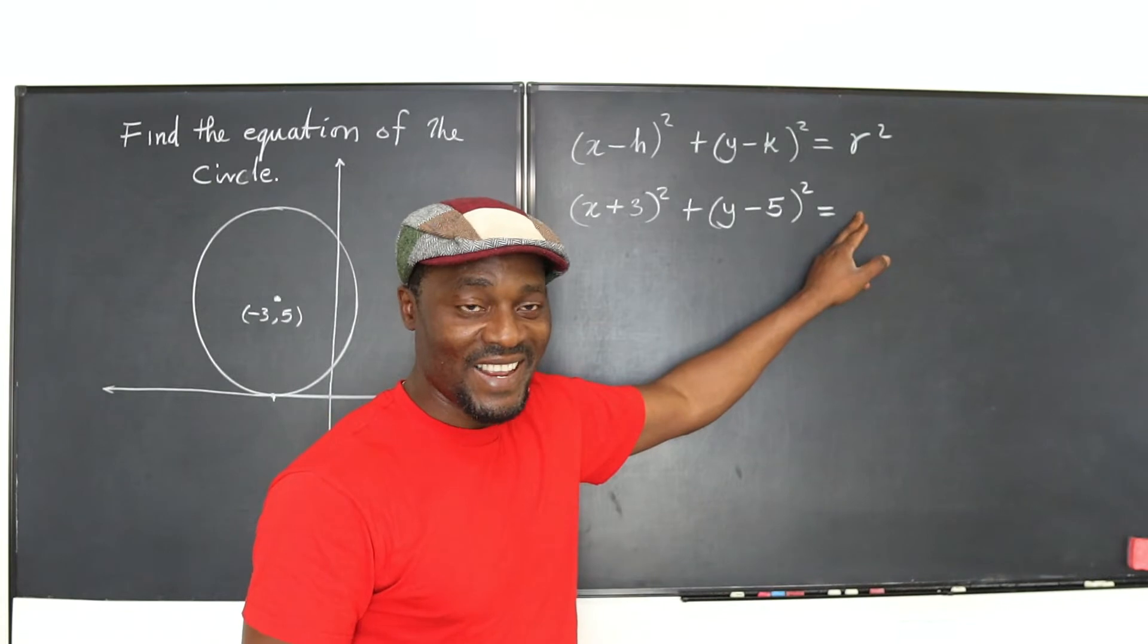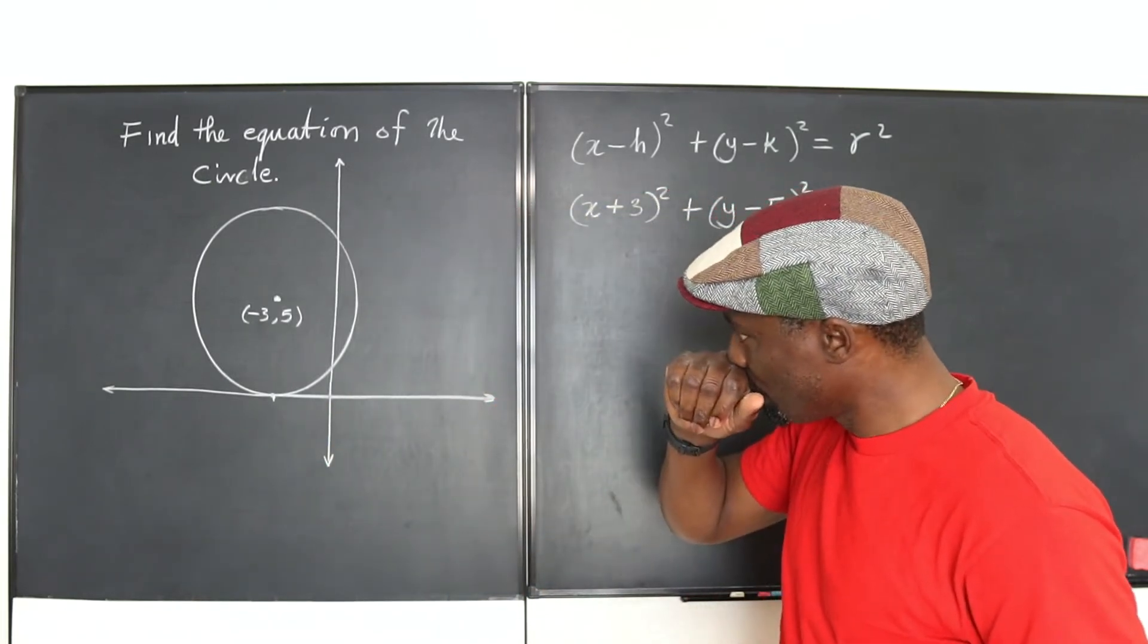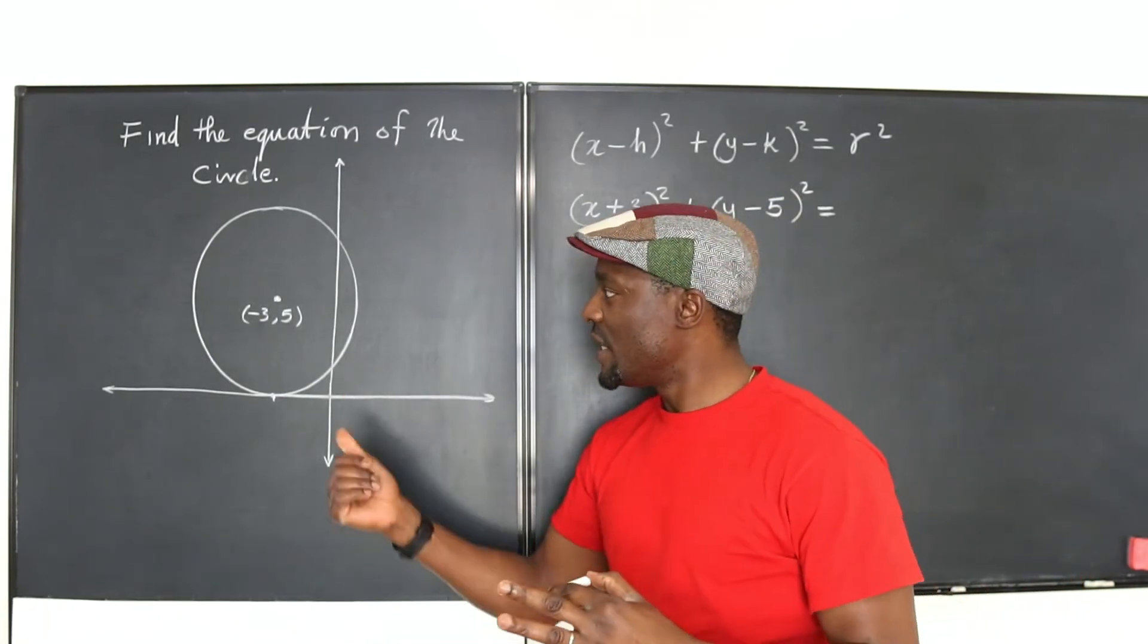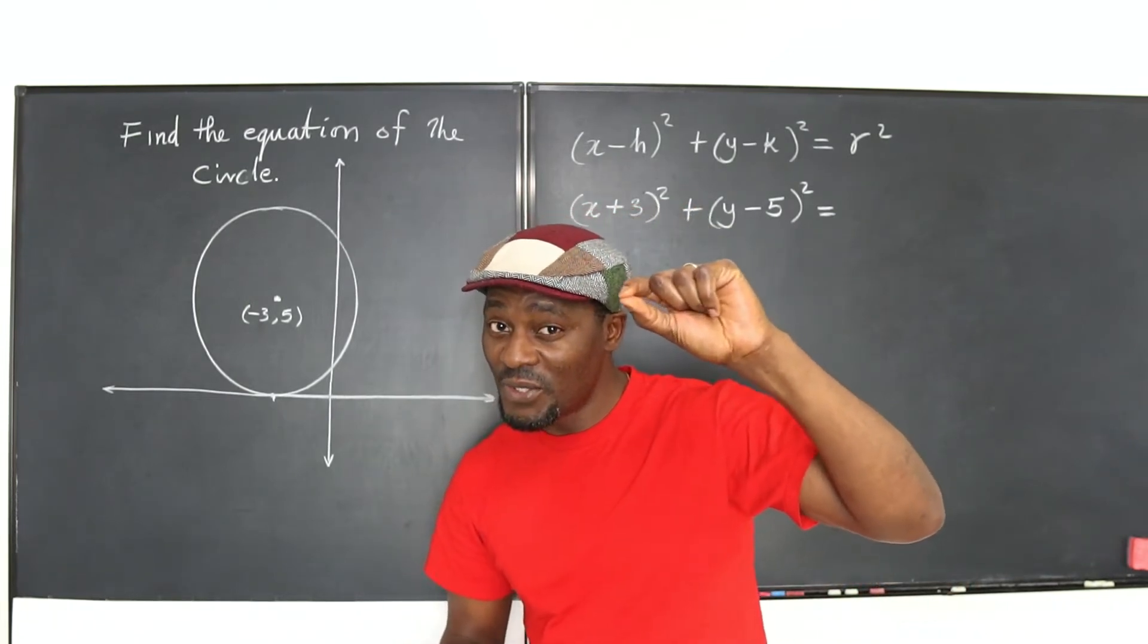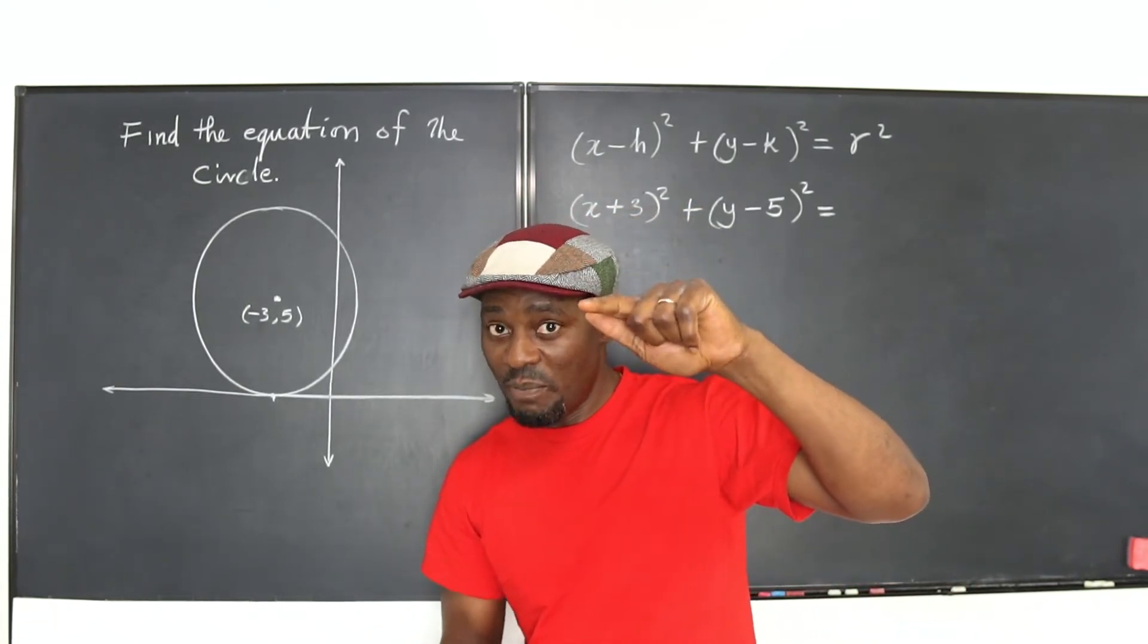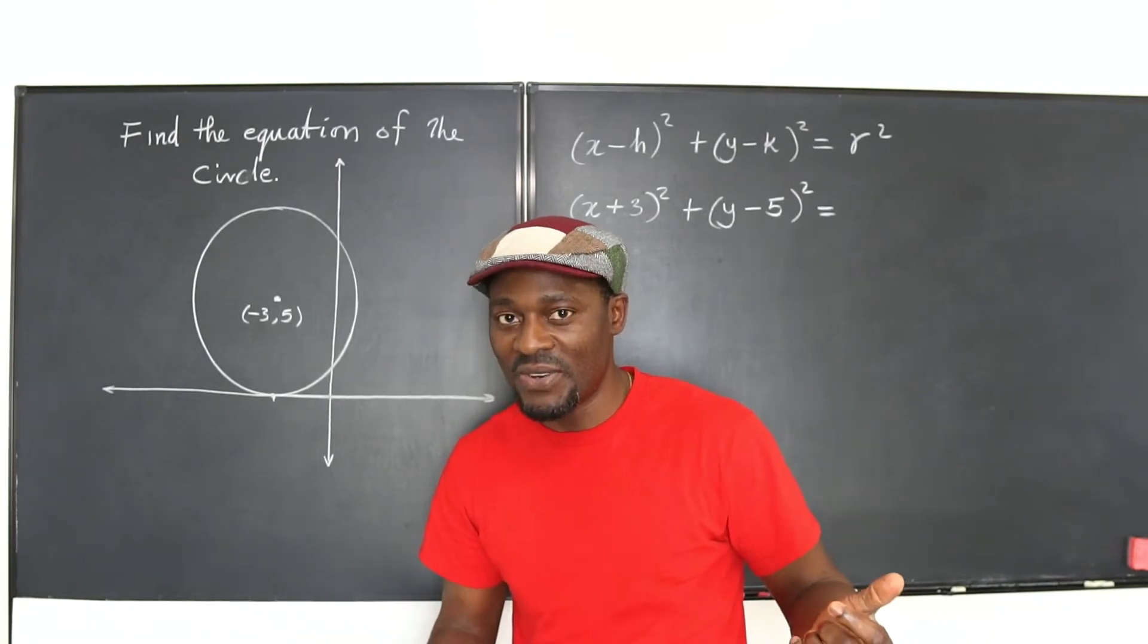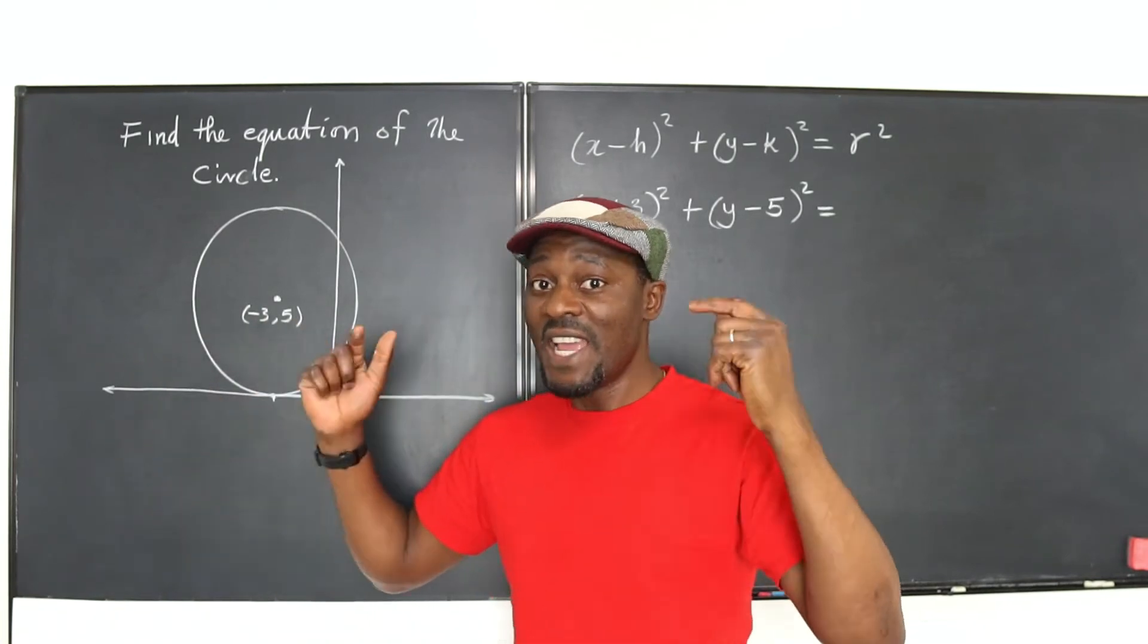That's all. I just need to know what the radius of this circle is. Now, you have to go back to your geometry. When you did circle geometry, you know that the distance from the center of a circle to any point on the circumference is called the radius. That's by definition. The distance from the center to any point on the circumference is the radius.